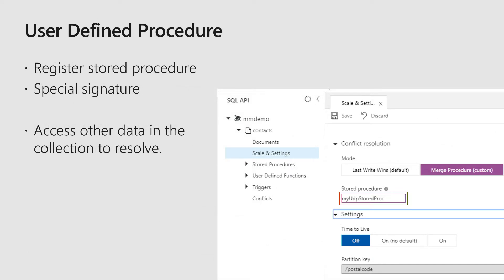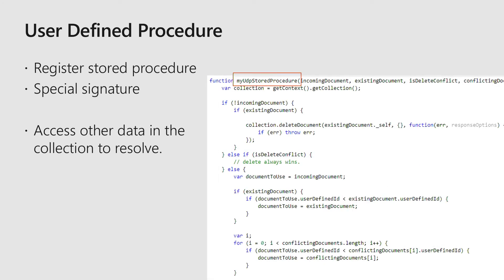The next mode is user-defined procedure, or UDP. This is a stored procedure you register with the collection, just like any stored procedure. However, this stored procedure has a very specific signature that you have to implement. With UDP, you have full access to the Cosmos DB partition, so you can use any data within it to help resolve the conflict. You get the collection context and can use that anywhere within the script. After the script runs, we'll delete the conflict for you. If your script throws an error or exception at runtime, we'll write that conflict into a read-only conflicts feed, and you can process and handle it manually at a later time.